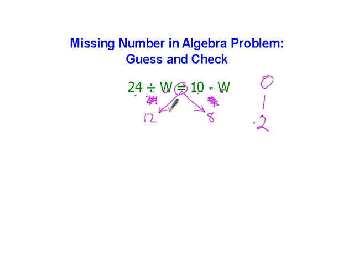Let me get rid of some of this out of the way. So we're going to go to 3 next. If I plug a 3 into this side and a 3 into that side, what do I get? 24 divided by 3 is 8. 10 minus 3 is 7. 8 is not equal to 7. So 3 does not work.